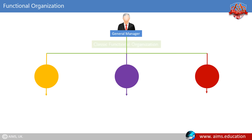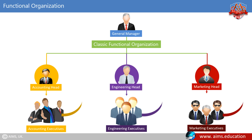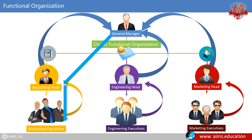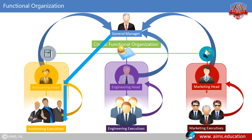The figure represents a classic functional organization where each employee has one clear superior. Grouping occurs from top level down to the bottom level — for example, accounting, engineering, or marketing. Project work of each group is performed independently from other groups.